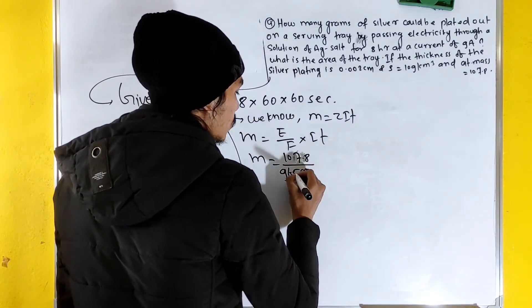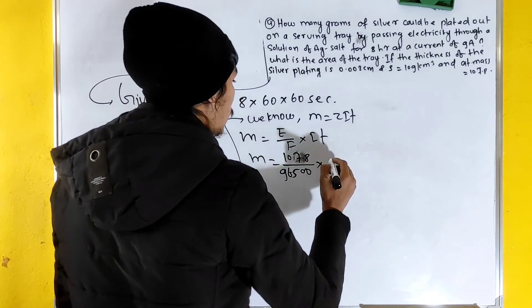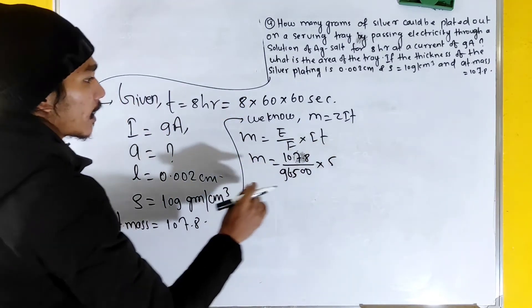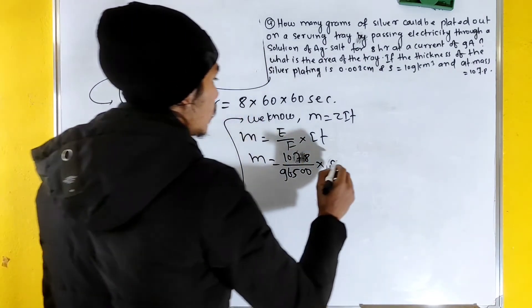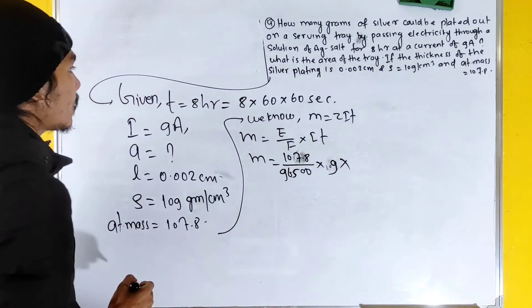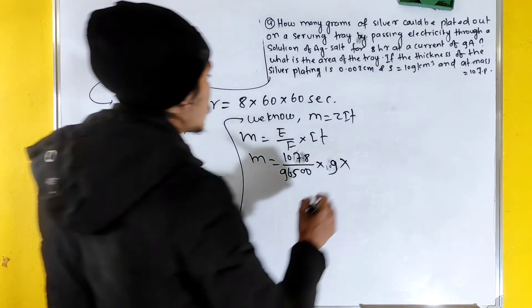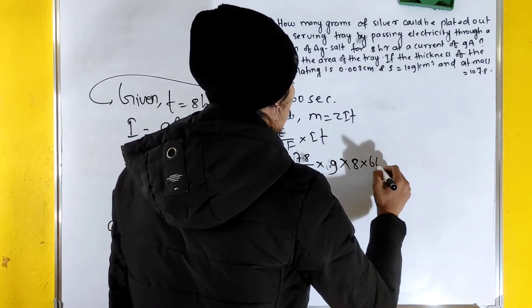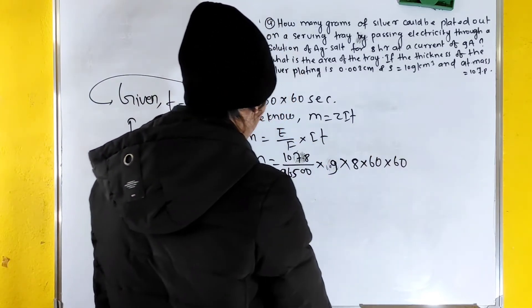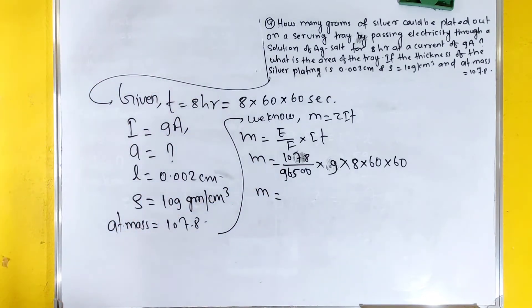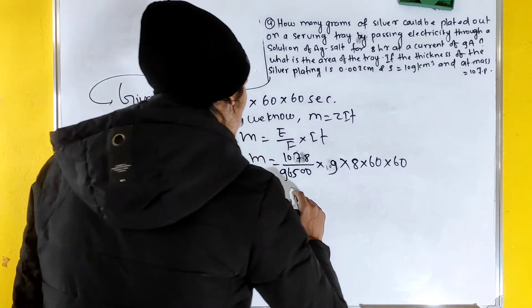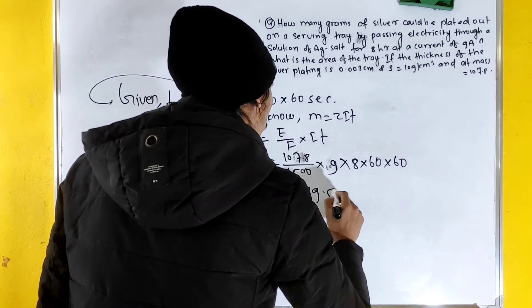Faraday is 96500. Current is 9 ampere, time is 8 × 60 × 60 seconds. After calculation, mass comes out to be 289.55 grams.